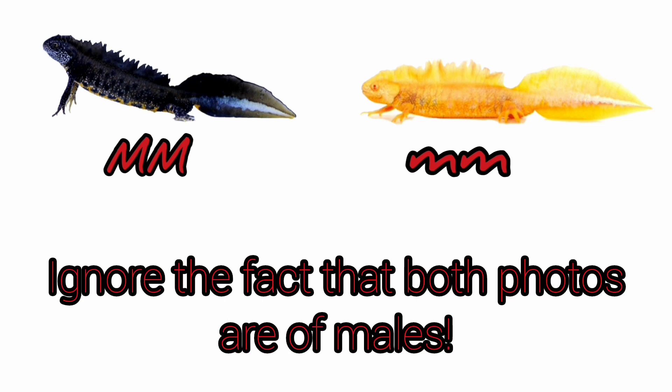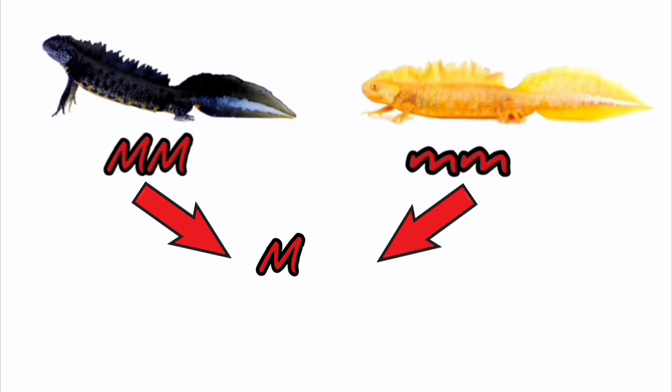So what would happen if we were to breed these two animals together? Let's take a look. The animal which only has normal copies of the melanin producing gene is only able to pass on a normal copy to its offspring. And as the albino animal only has defective copies of the melanin producing gene, that is the only kind of gene it is able to pass on. So the only possible combination of melanin producing genes that these offspring can have is one normal melanin producing gene and one defective version.